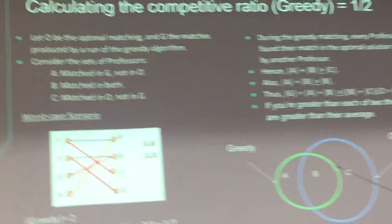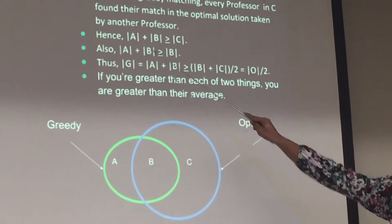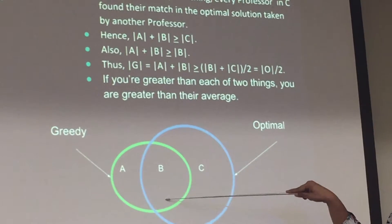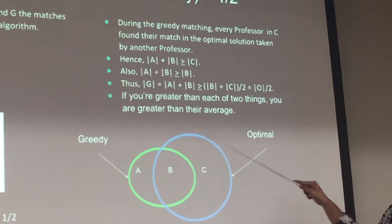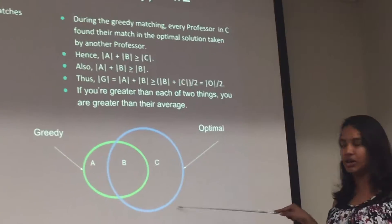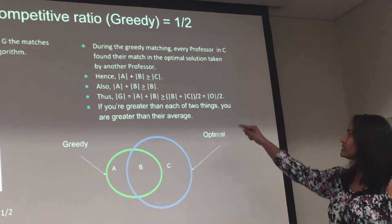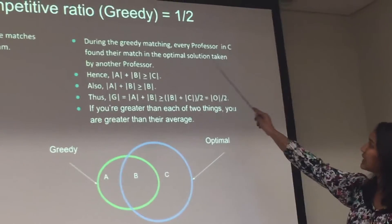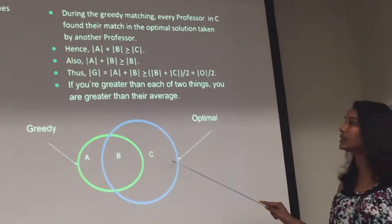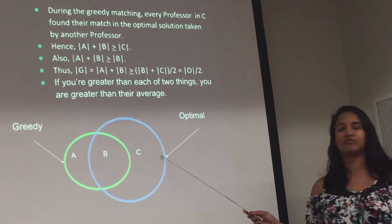Here we define three sets: A is matched in greedy but not in optimal, B is matched in both greedy and optimal, and C is matched in optimal but not in greedy. Every professor in C has already been matched in the optimal solution — that matching has already been taken by some other professor.